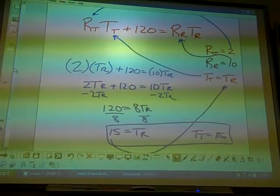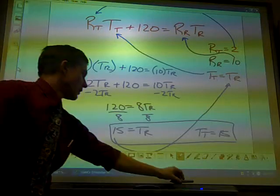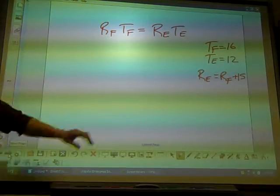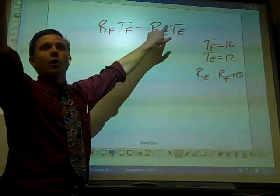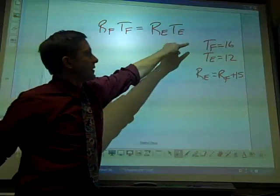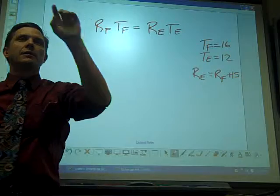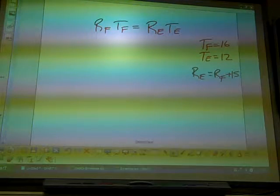Again, we can do anything we want as long as the number of equations and the number of variables are the same. Last one I want to show, and I want to talk about why. R_F T_F, two variables. R_E T_E, two more variables, that's four. T_F T_E, and then R_E equals R_F plus 15. Four equations, four unknowns. It is solvable.